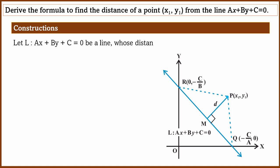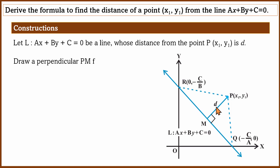AX plus BX plus C equals 0 — that is one line. Its distance from point P is D. This is the line, this is the point, that is the distance D. This is the perpendicular line — E point is on the perpendicular line. This is 90 degrees.